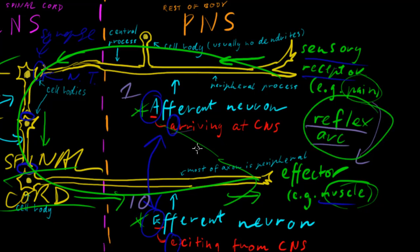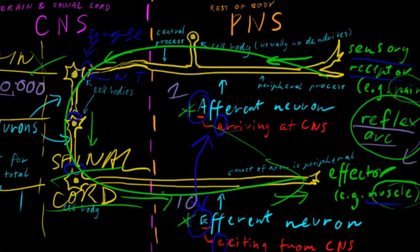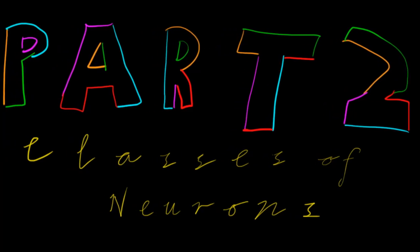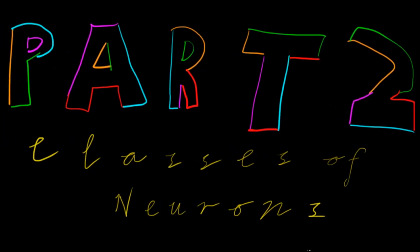And this is a fairly classic example used by a lot of textbooks and other things. So, yeah, I hope this has been useful for you. This has been part two, classes of neurons.